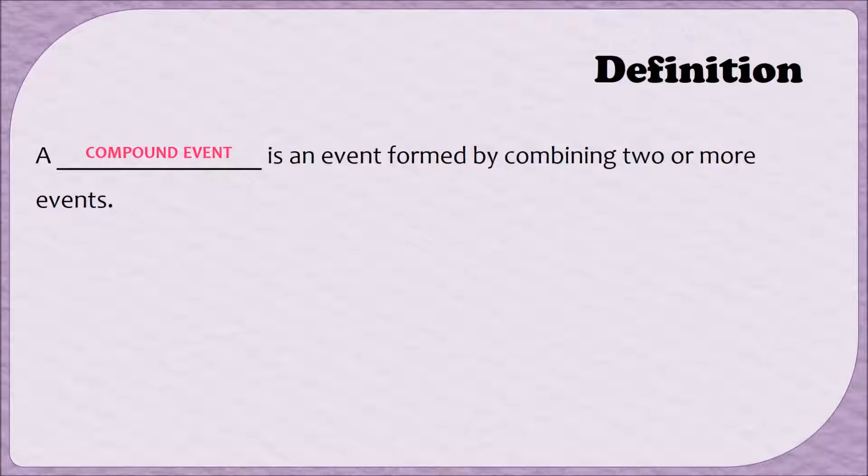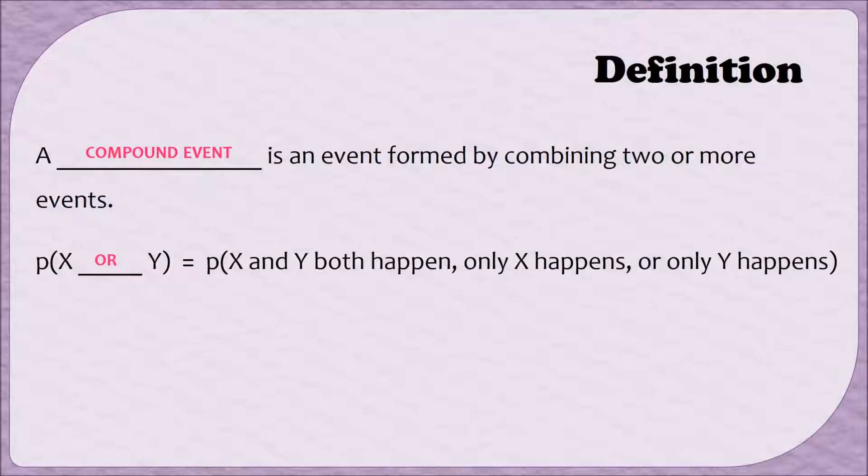A compound event is any event that is formed by combining two or more events together. In this video, we'll be discussing two different kinds of compound events. The first one is an OR. When I say that X or Y happens, that means that only X happens, only Y happens, or both of them happen. So in probability, an OR is what's called an inclusive OR. It includes the case when both events are happening.